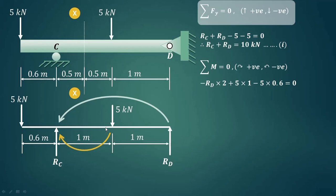Now this will create clockwise moment. 5 kN, the arrow of this 5 kN will produce clockwise moment about point C, so 5 and perpendicular distance is 1, so it is 5 into 1. This anti-clockwise moment created by another 5 kN force, so 5 into 0.6, that is minus 5 into 0.6 because this is anti-clockwise moment.